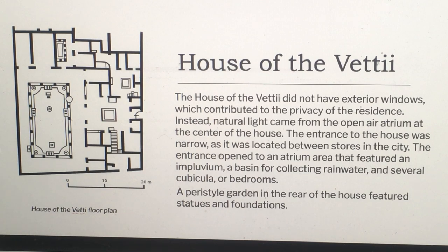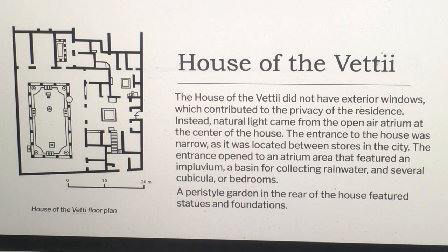Instead, natural light came from an open-air atrium at the center of the house. The entrance was narrow as it was located between stores in the city. The entrance opened into an atrium area that featured an impluvium — a basin for collecting rainwater — and several cubicula, or bedrooms. A peristyle garden in the rear of the house featured statues and fountains.